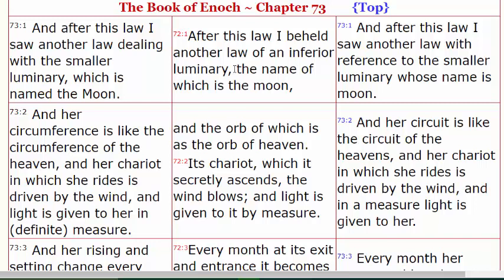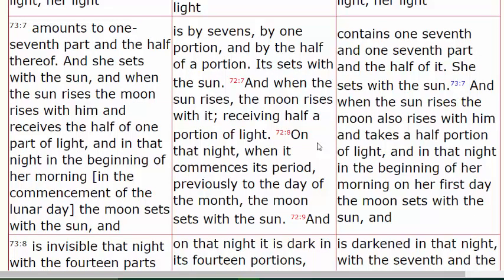We're going to talk about all of the elements on our Father's timepiece. We now understand that the sun regulates the day, which starts at sunset. Let's look at the second law of the luminaries, referring to the inferior luminary we know as the moon. We've covered this in many videos — the moon regulates the month. Whereas the sun regulates the day, the moon regulates the month.